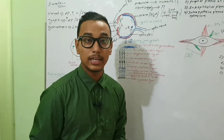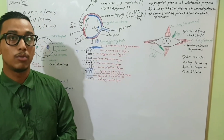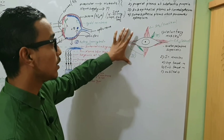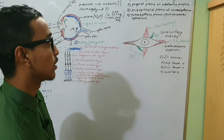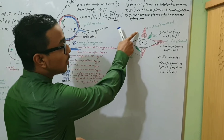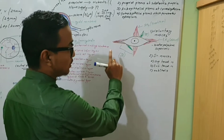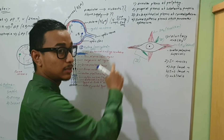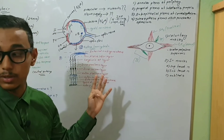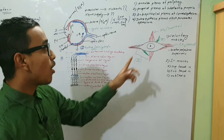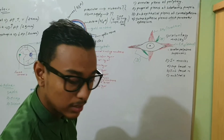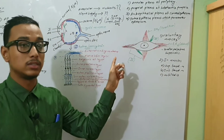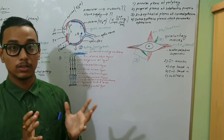Now let us discuss the muscles of the eyeball. There are two types: voluntary muscles and involuntary muscles. The voluntary muscles are the four rectus muscles — superior rectus, inferior rectus, lateral rectus, and medial rectus — and two oblique muscles: superior oblique and inferior oblique. I will now show these on the dummy of the eyeball.